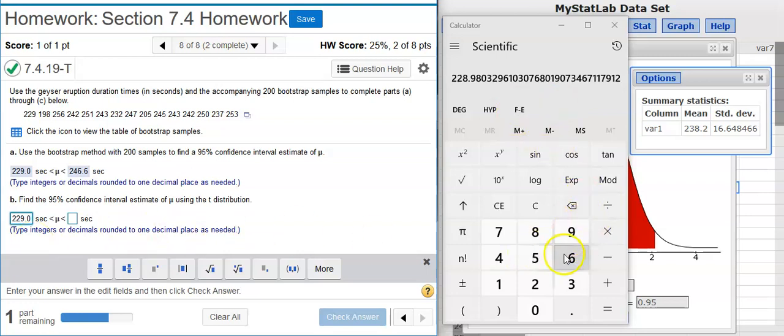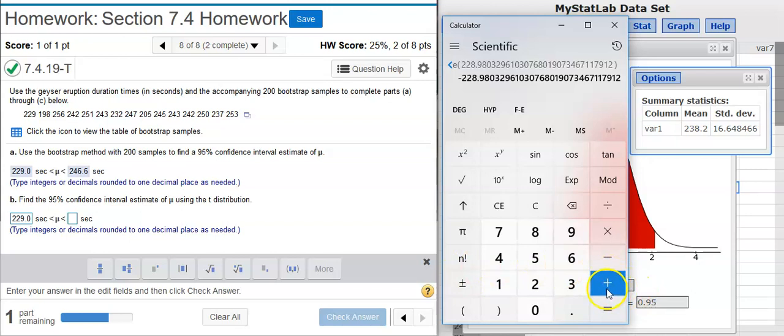And now I'm going to do the same thing to get the upper limit. So first I'm going to go back and get my margin of error. And I add that to my center point, which is the mean value.